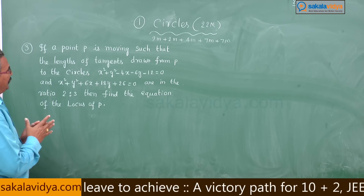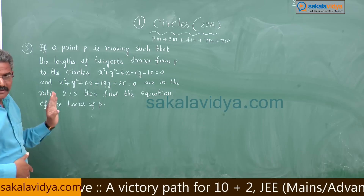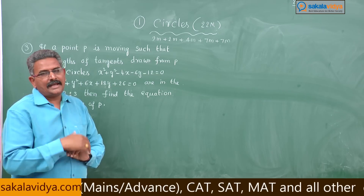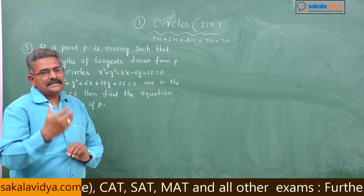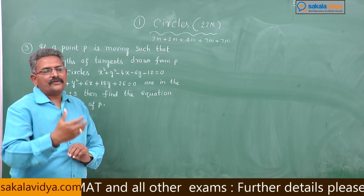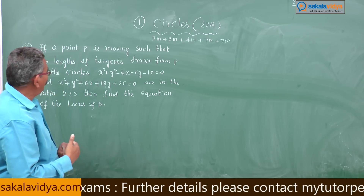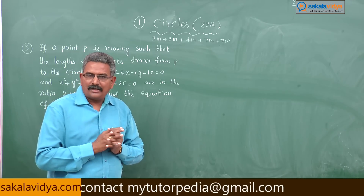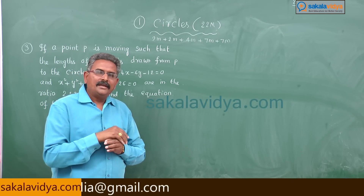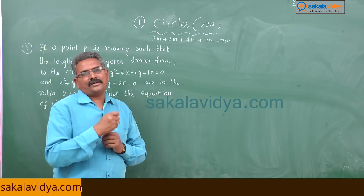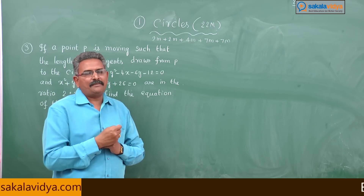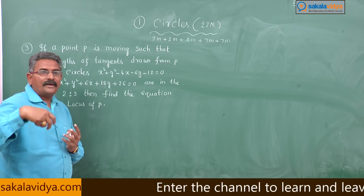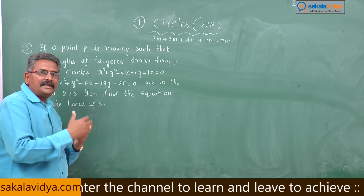This problem is based on locus. Locus means a set of points which follows some geometrical condition. First of all we should know the length of the tangent formula. The length of the tangent from point (x₁, y₁) to the circle S = 0 is given by √S₁₁. Here two circles are given; the length of the tangent from P(x₁, y₁) to the first circle is √S₁₁.